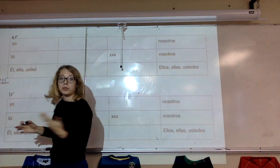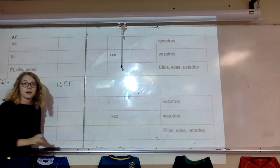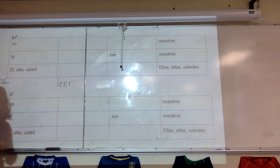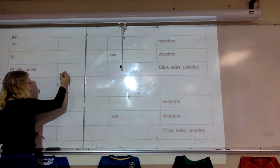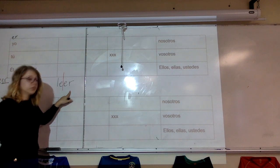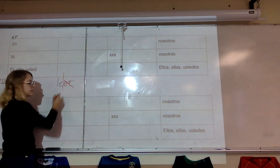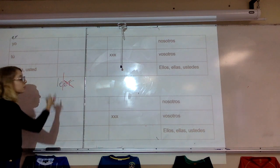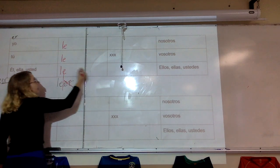Starting with a verb that ends with ER, like the verb leer. We know that in Spanish these verbs are made up of two parts. We have the root and we have the ending. What changes in regular ER and IR verbs is only the ending, so the root stays the same. So I'm doing a conjugation chart for leer. I'm going to start everything with leer.